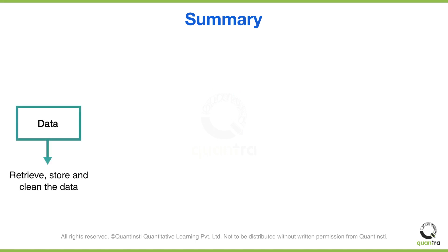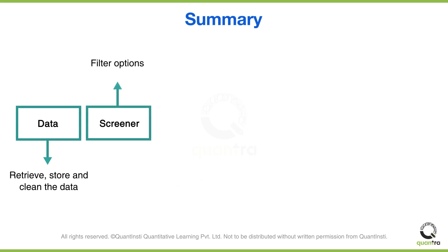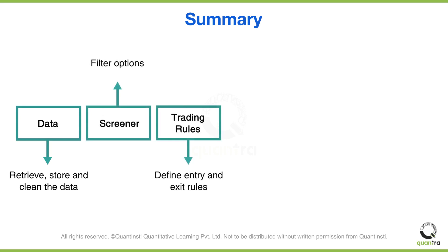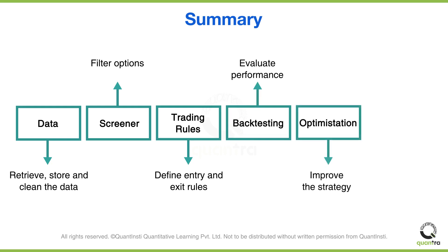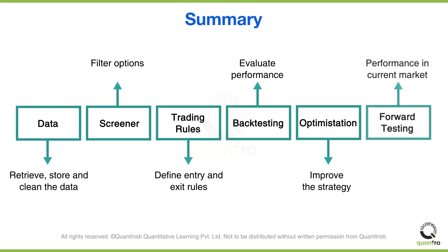To summarize: you start by retrieving, storing, and cleaning the data. Then you filter out options using a screener and define the trading rules. Next, you backtest your strategy and evaluate its performance on past data. After that, you can improve the strategy by optimizing it. Finally, you start paper trading to test if your strategy performs well in the current market scenario.